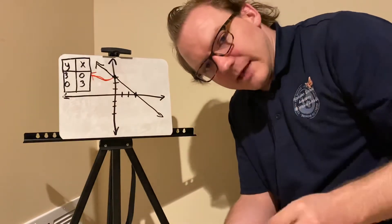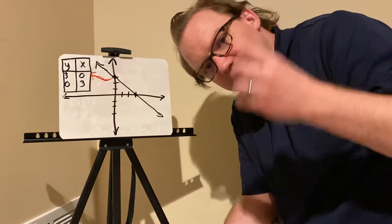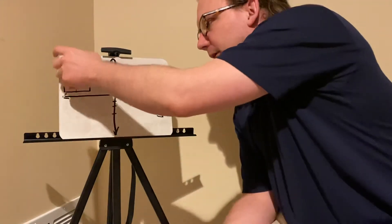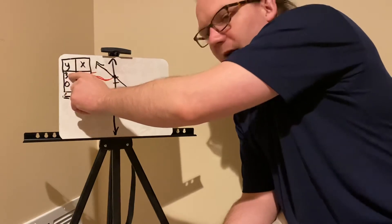You're looking for an x value of 0. When x is equal to 0, what is y? That's your y-intercept. So if I'm looking at a chart, I want to say what's my x value? When that's 0, what's my y value?